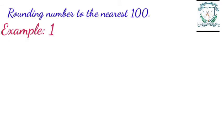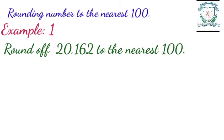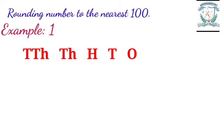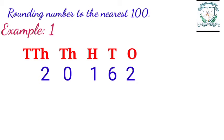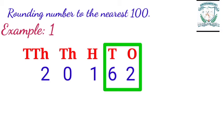Now let us understand the process of rounding numbers to the nearest hundred. Example one: round off 20,162 to the nearest hundred. Step one: arrange the given number in a place value chart. Step two: identify the place to be rounded — in 20,162, the hundreds place should be rounded off to the nearest hundred. Step three: check the digits in the tens and ones places.